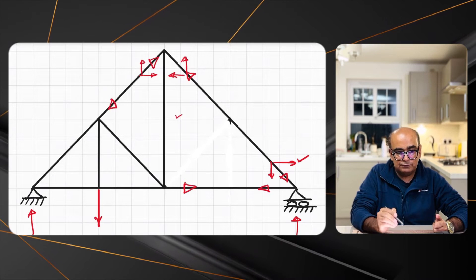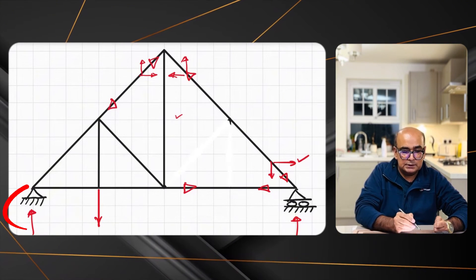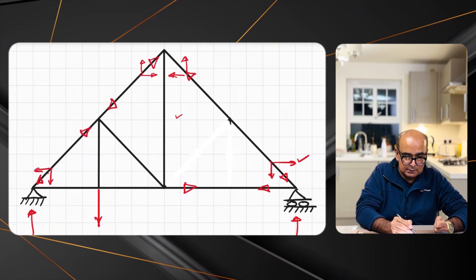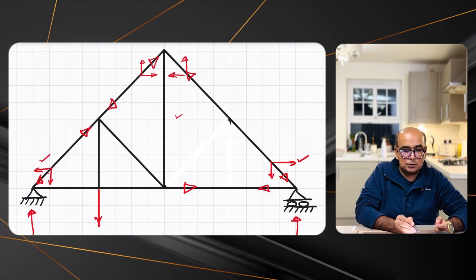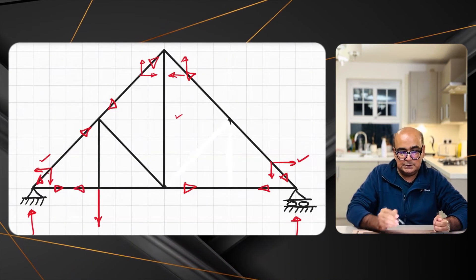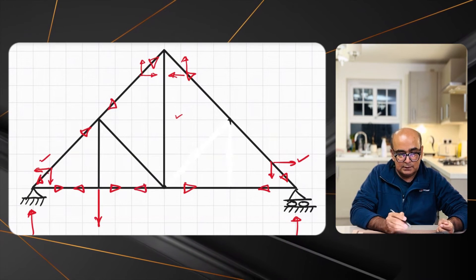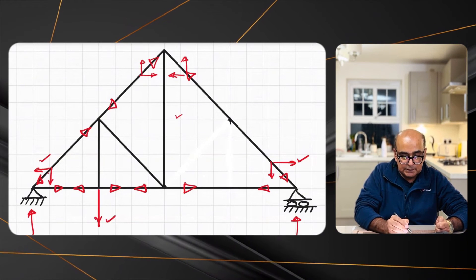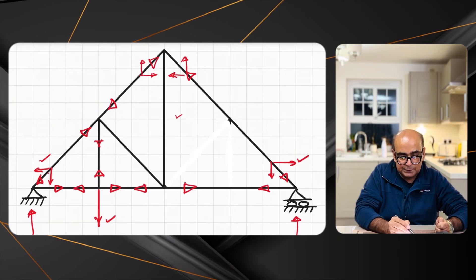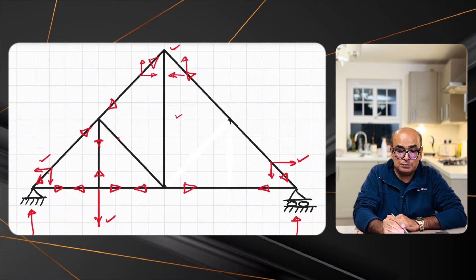I'm not entirely sure of the force direction at one joint yet, so let's figure out the left side members first. If the vertical force at the left support is pointing upwards, the force in the adjacent member should be pointing downwards — arrows in that direction. When the horizontal component moves left, the member's horizontal component should move right. There is no other force at that node, so it moves right.